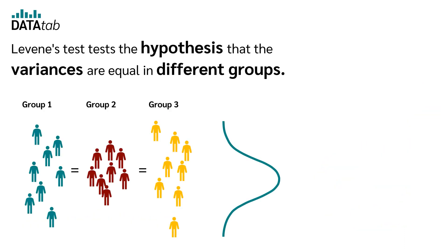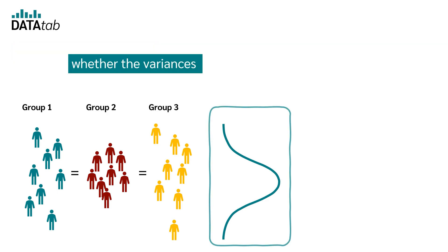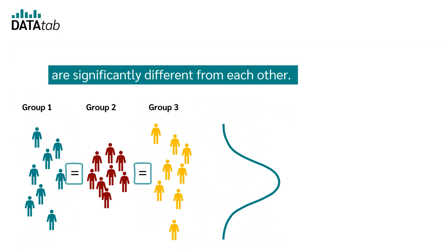What is a Levene's test? Levene's test tests the hypothesis that the variances are equal in different groups. The aim is to determine whether the variances in different groups are significantly different from each other.